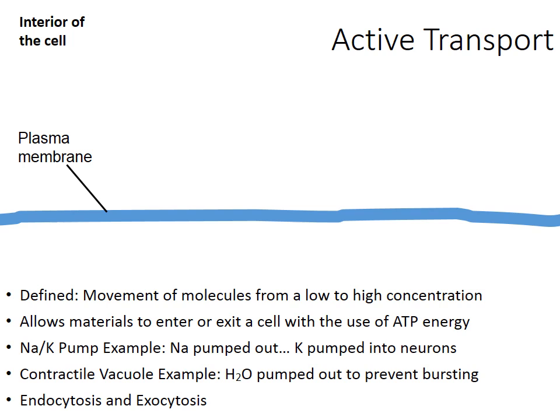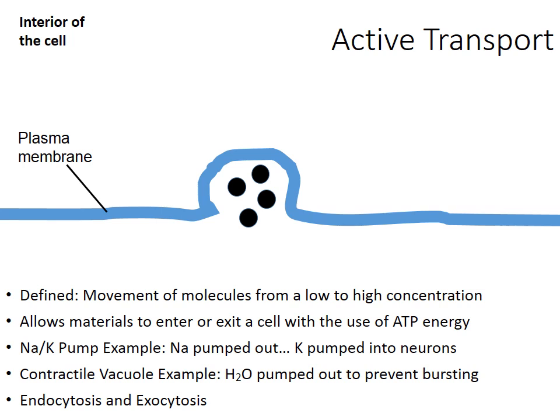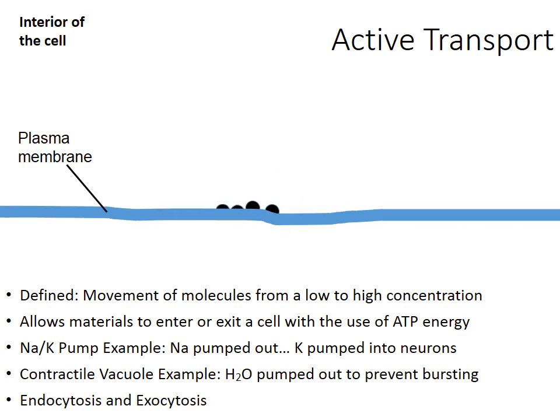To finish up, the process called exocytosis is used to release materials from the cell. Here comes a cell part known as a vesicle, perhaps carrying proteins that the cell is going to get rid of. The vesicle fuses with the cell membrane — the plasma membrane — because the vesicle and the plasma membrane are made from the same molecules: a phospholipid bilayer. Those proteins are then released outside the cell. This process requires the use of ATP — another great example of active transport.